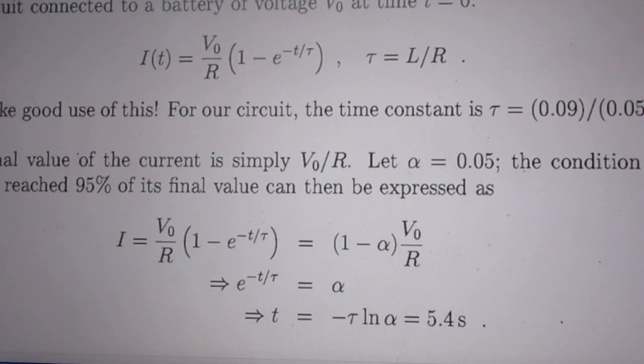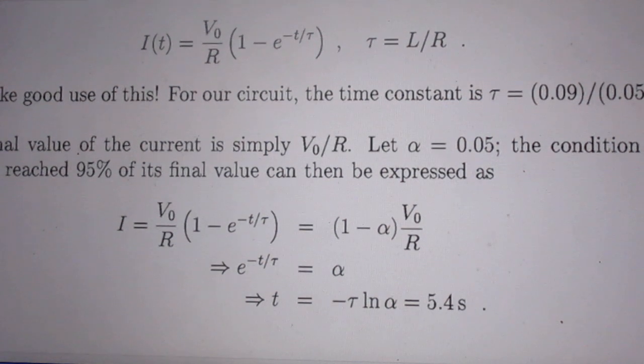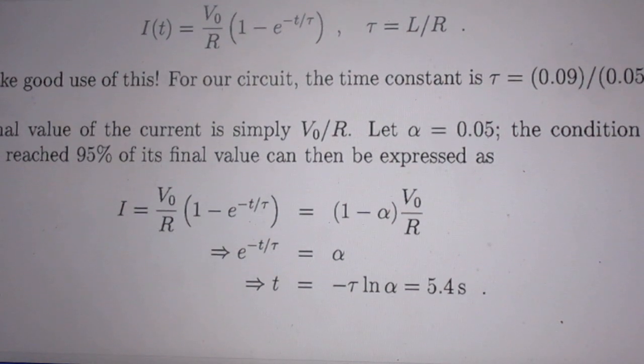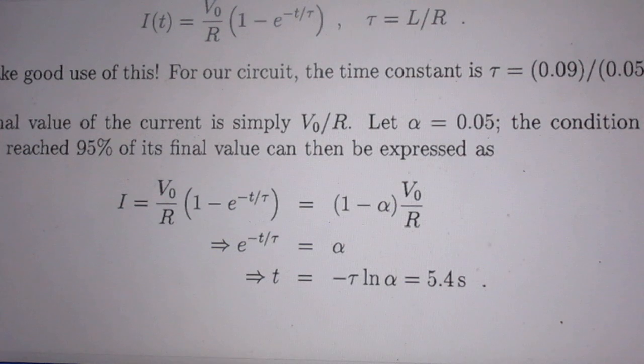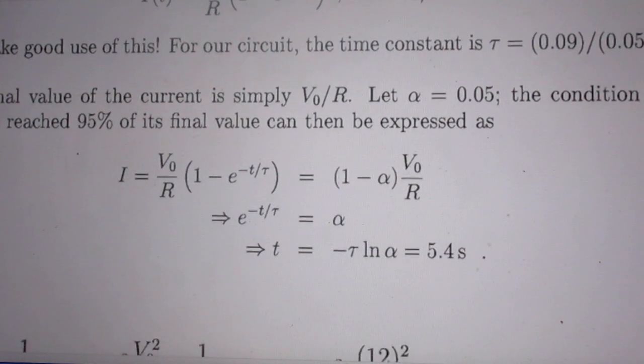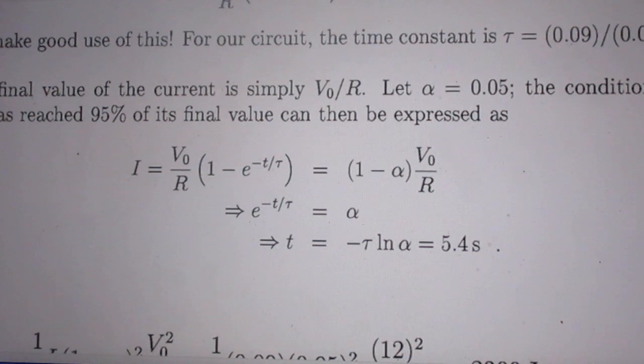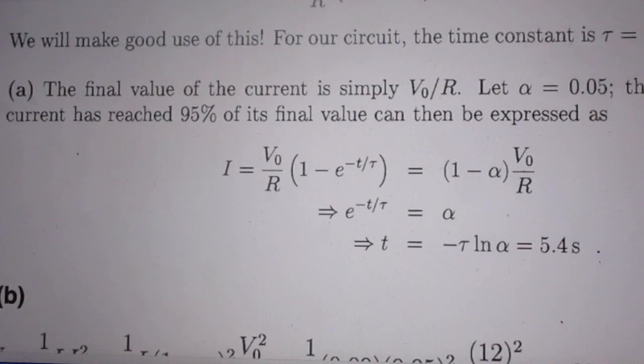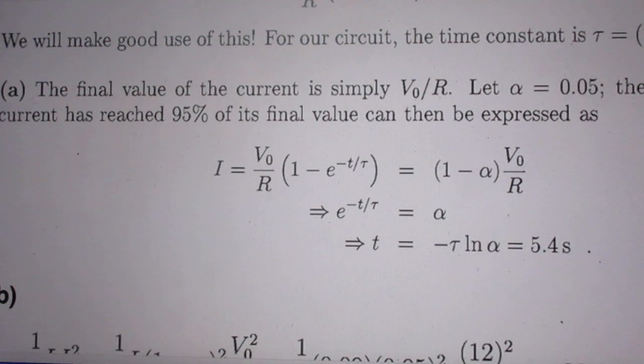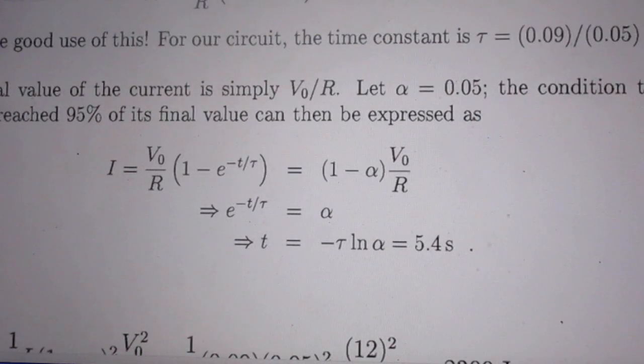So read this. So I just define alpha as e to the minus t over tau. And I'll pop the value for T. So it takes about 5.4 seconds, which is the correct answer to A.